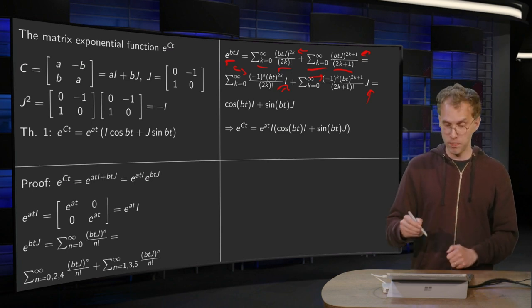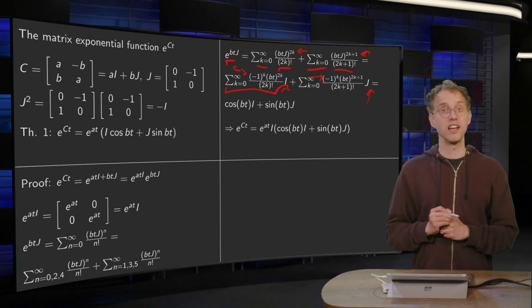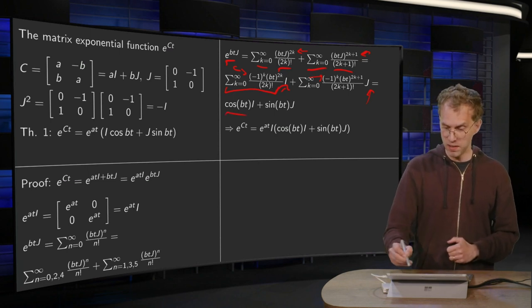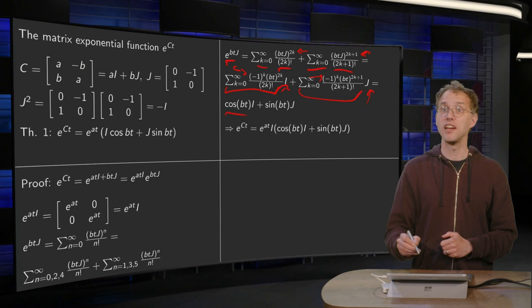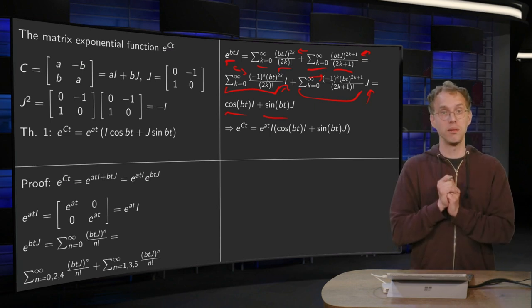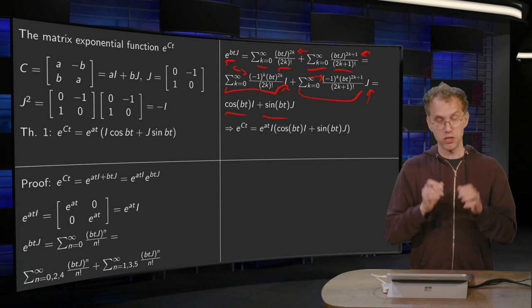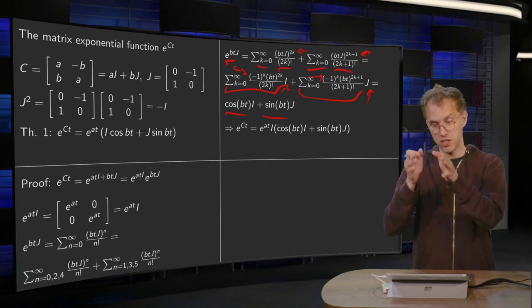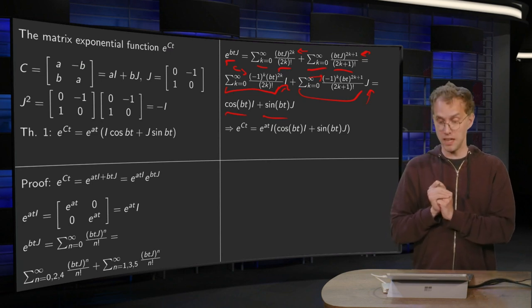And now we're done. Because here we recognize the Taylor series of the cosine of bt, and here we recognize the Taylor series of the sine of bt. So e to the power bt times j is just cosine bt times i plus sine bt times j.